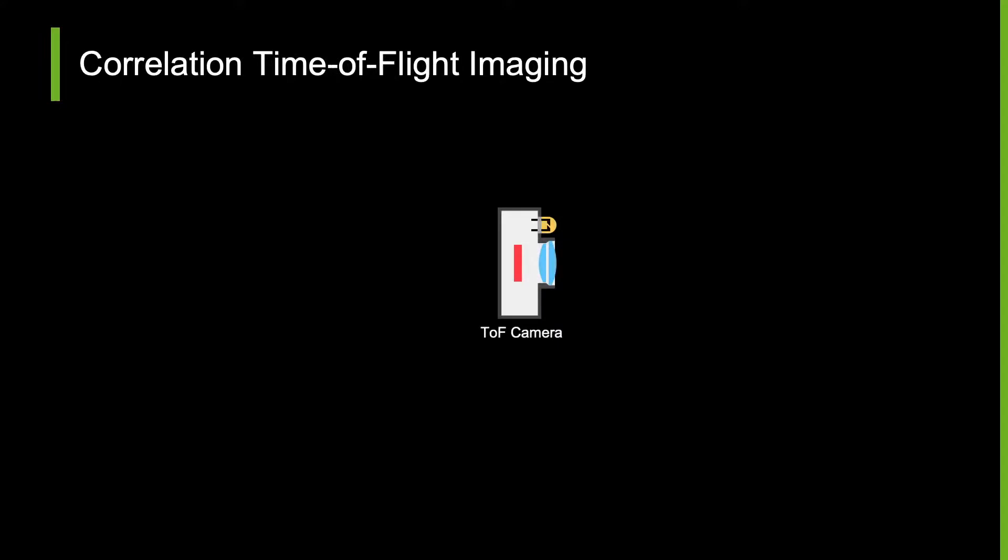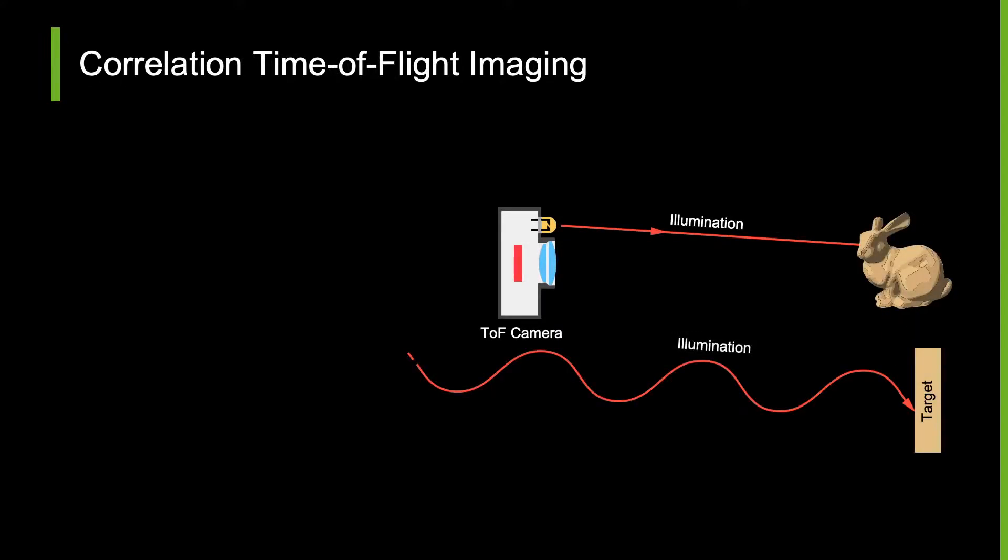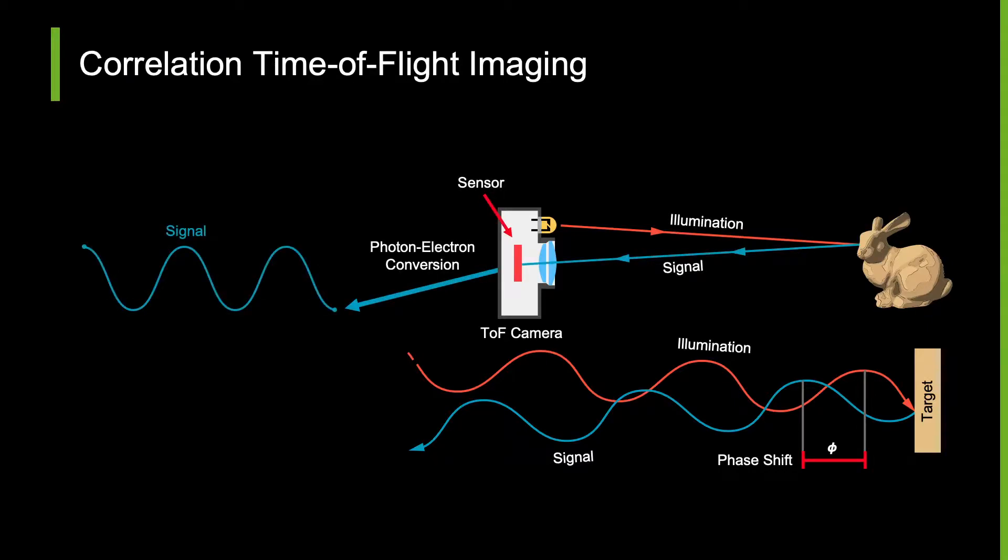A typical correlation imager starts off by illuminating a target with continuously modulated light. This light is reflected by an object, which results in an accrued, depth-dependent phase shift. The light is collected by the camera sensor and converted into an electrical signal. This is then correlated with an onboard reference to produce a time-of-flight correlation measurement.